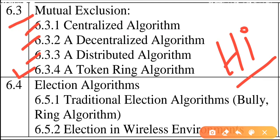Now we will see how the token ring algorithm works. There are lots of processes that want to share the same resources. All the processes are connected to each other, and mutual exclusion remains the main point.